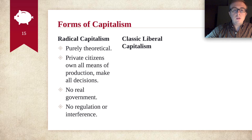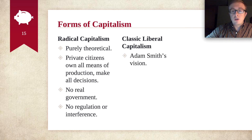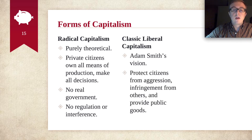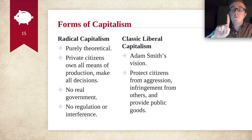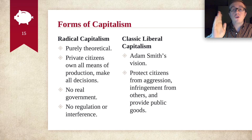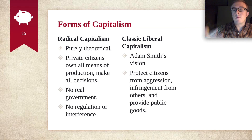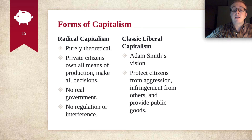Moving on, we have classic liberal capitalism. This is Adam Smith's brainchild — this is what he thought of when he discussed capitalism. And really, he thought there are three main functions for a government. Please make sure you know these three main things. Number one, it protects citizens from aggression — the government exists to make sure that you don't get hurt, that you don't get murdered. Two, infringement from others, which could mean something like protecting your property. So both your life and your property are protected here.